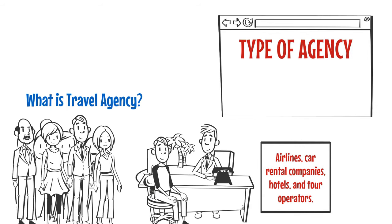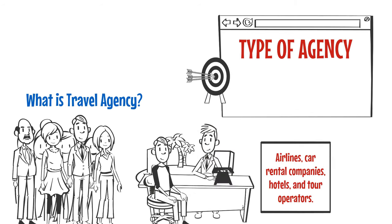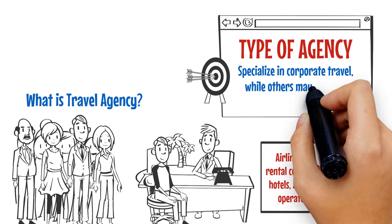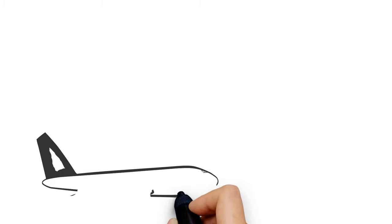The first step in starting a travel agency business is to decide what type of agency you want to start. There are many different types of travel agencies, each with its own focus and target market. For example, some agencies specialize in corporate travel while others may focus on leisure travel.